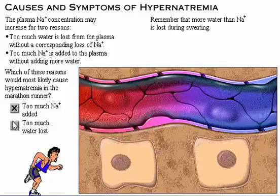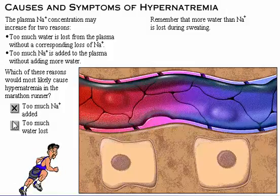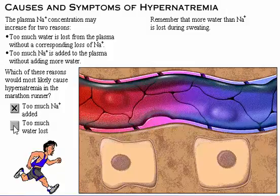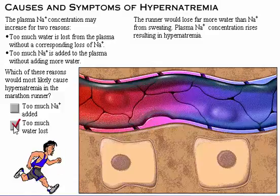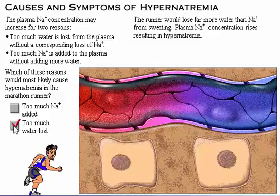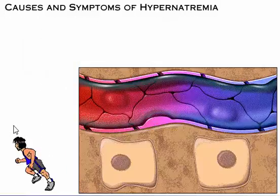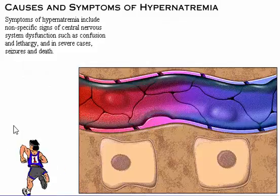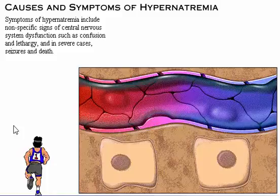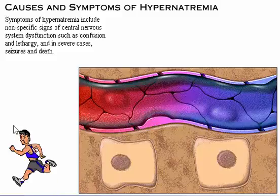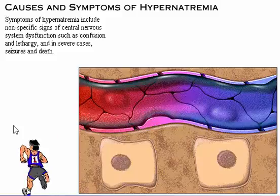Remember that more water than sodium is lost during sweating. Although the runner would lose sodium, he would lose far more water from sweating. Plasma sodium concentration rises, resulting in hypernatremia. Notice that the runner appears to be confused and disoriented. Symptoms of hypernatremia include nonspecific signs of central nervous system dysfunction, such as confusion and lethargy, and in severe cases, seizures and death.